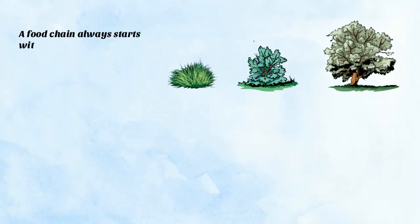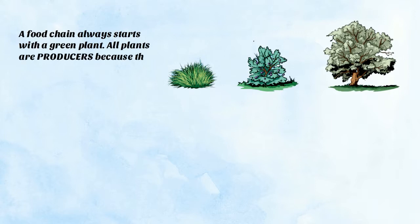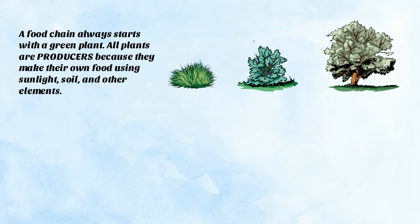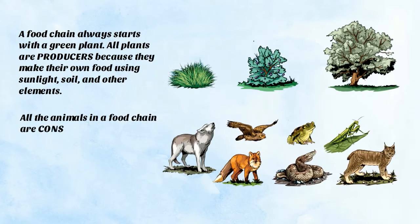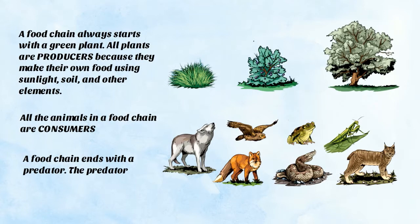A food chain always starts with a green plant. All plants are producers because they make their own food using sunlight, soil, and other elements. All the animals in a food chain are consumers.